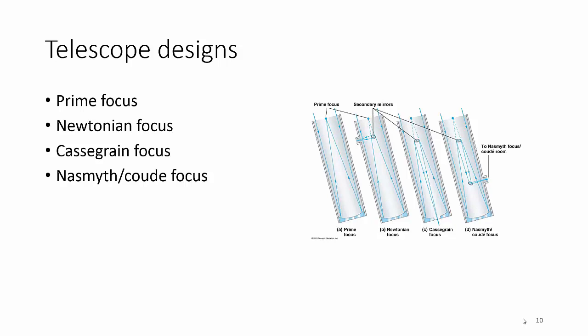So Newtonian is the next one, and actually we'll talk about this one in the next slide. But prime focus, Newtonian focus, Cassegrain focus, and the Nasmyth focus—those are all different types of reflecting telescope designs.